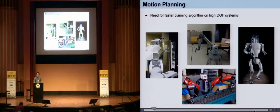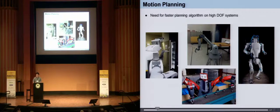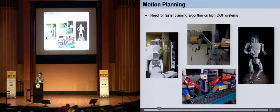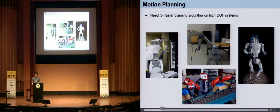Motion planning is a fundamental skill for robots to move in environments without collision, while still satisfying some notion of trajectory optimality. With increasing use of high degree of freedom robots, there has been a growing need for fast motion planning algorithms. In this work, we develop a family of fast motion planning algorithms.